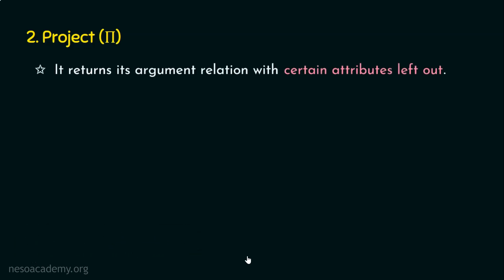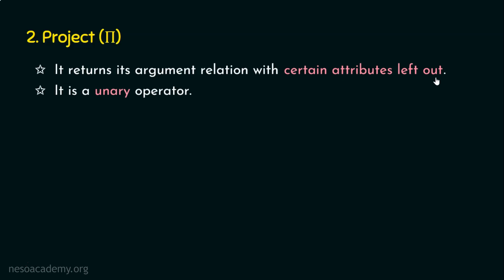When we see an example, it will be easy to understand. The project operation is going to return its argument relation with certain attributes left out. For example, if we have five columns and the output requires only two attributes instead of five, we can go for project. Select would give all five attributes, but if our requirement is only selected attributes, we use the project operation. Like the select operator, project is also a unary operator — it takes only one relation as input and produces an output relation with certain attributes left out based on our requirement.